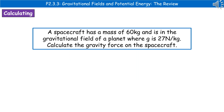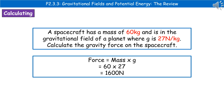An example question: a spacecraft has a mass of 60 kilograms and is in the gravitational field of a planet where G is 27 newtons per kilogram. Calculate the gravity force on the spacecraft. First, as always in a calculation question, highlight, circle, underline, or jot down the key bits of information from the question, which I've done in red. Then recall the formula: force equals mass times G. Substituting in our values, 60 times 27, gives us the answer of 1,600 newtons. Always write down each step of your working so that even if you get the answer wrong, you get some marks for the working.